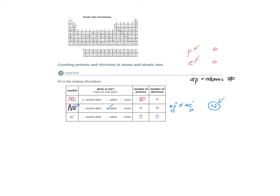Here I'm given an element symbol, and the element symbol is Ge for germanium, except it has a charge in the top right corner. By convention, the charges of ions are placed as superscripts in the top right, and the charge is minus 1. So I know this is not a neutral atom — it is an ion. The question is, is it a positively charged ion or a negatively charged ion? Well, the charge is negative 1, so this is not a cation but an anion.